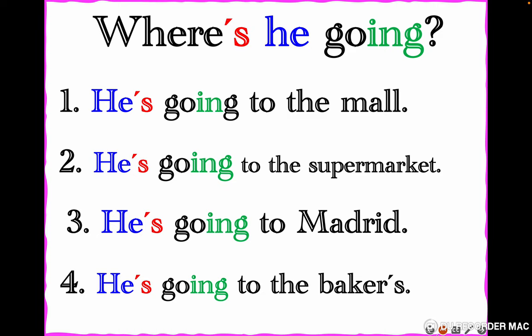Where is he going? — Now he's going to the mall, now he's going to the supermarket, now he's going to Madrid, now he's going to the baker's to buy bread and sweets. Let's repeat: 'Where's he going?' — He's going to the mall, he's going to the supermarket, he's going to Madrid, he's going to the baker's.